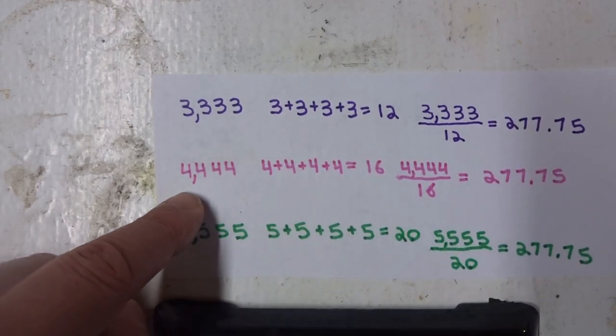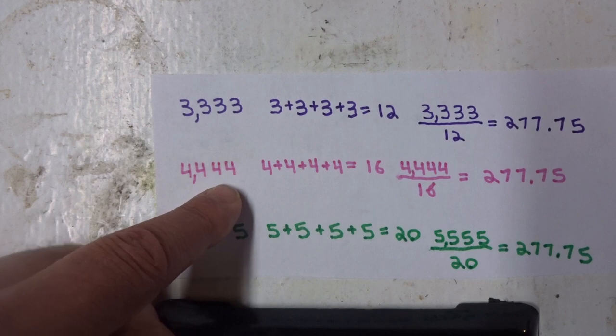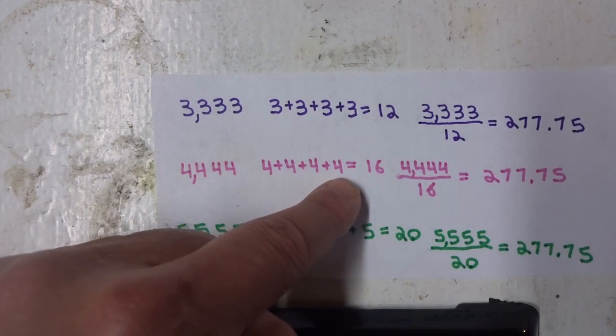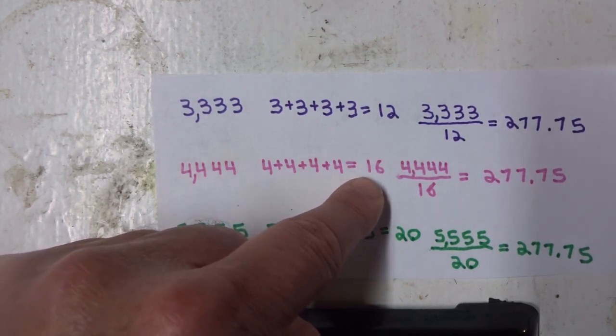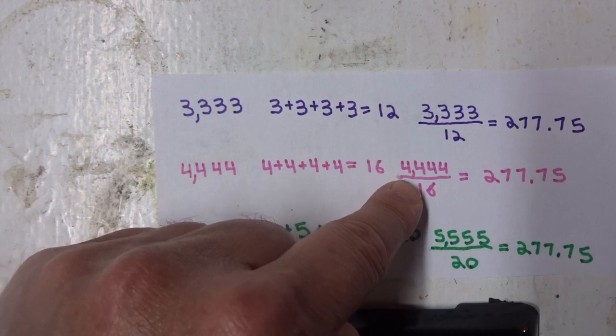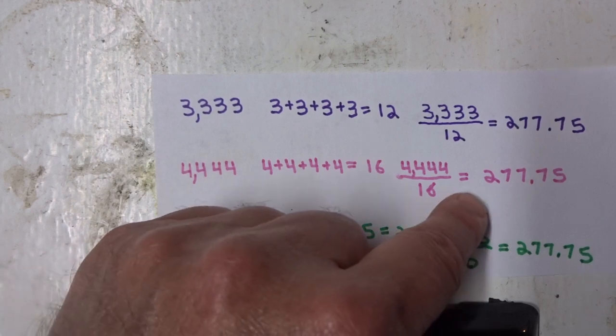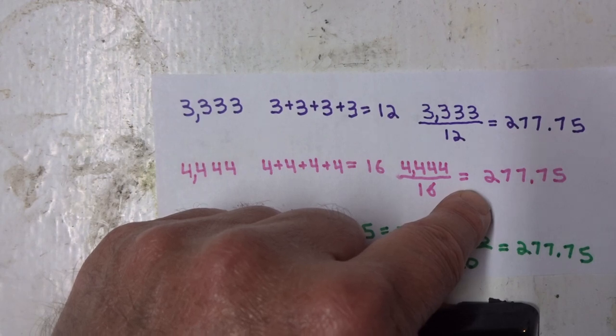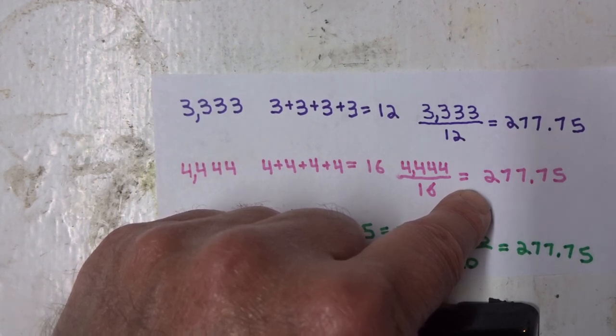If we take 4,444, and add the fours together, we get 16. 4,444 divided by 16 equals, once again, the same number, 277.75.